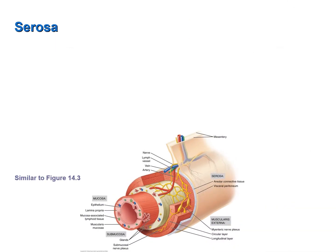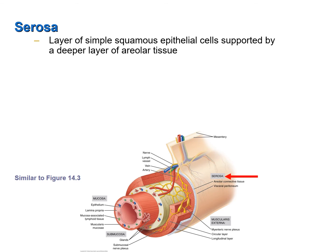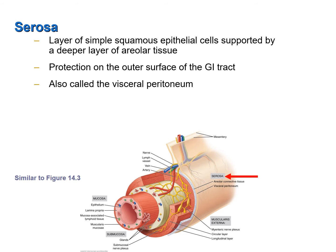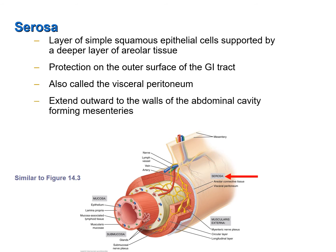Let's now look at the final layer of the GI tract, the serosa. The serosa is the outermost layer, or tunic, of the GI tract. It consists of a layer of simple squamous epithelial cells supported by a deeper layer of areolar tissue. Its function is to protect the outer surface of the GI tract, and it is also called the visceral peritoneum. Notice that there are extensions of the serosa that envelop blood vessels and nerves extending from the GI tract. These mesenteries not only protect these blood vessels and nerves that serve the GI tract, but they also extend to the walls of the abdominal cavity and help anchor the GI tract in place.